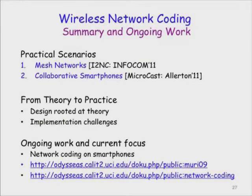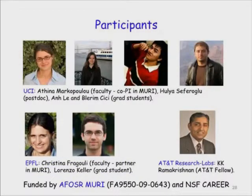In summary, as part of this project we are interested in applying network coding to improve the performance of wireless networks. We have tried two practical scenarios: one in the context of wireless mesh networks and the other in the context of collaborative smartphones. Our work spans a range of problems from theory to practice, and our current focus and ongoing work is on implementing network coding on smartphones. This work is a collaboration between our team at UCI and our partners within the MURI at EPFL and AT&T Research Labs.